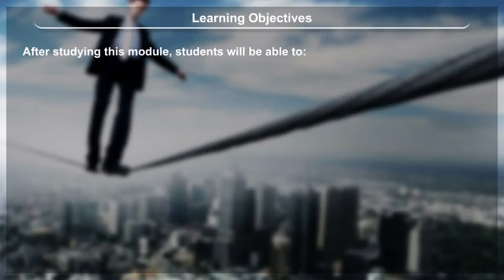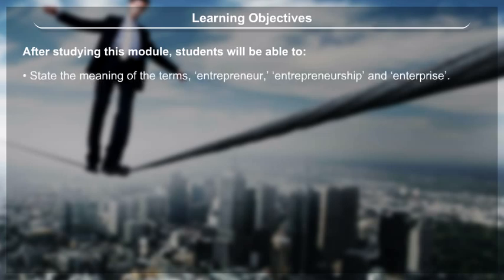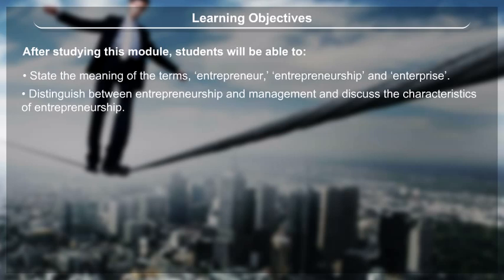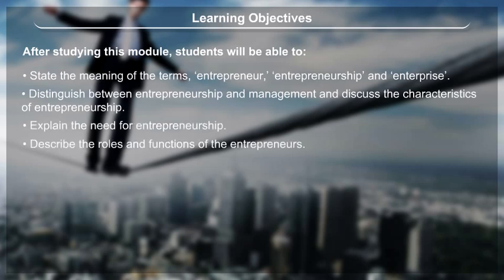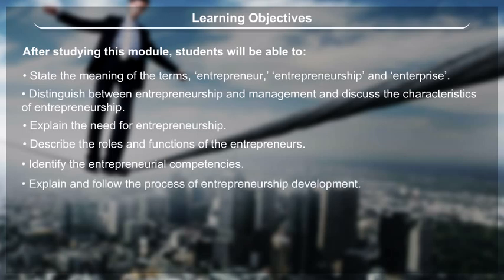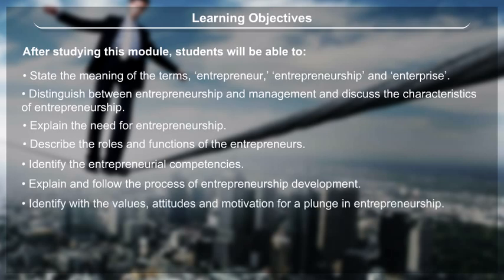Learning Objectives. After studying this module, students will be able to: state the meaning of the terms entrepreneur, entrepreneurship and enterprise; distinguish between entrepreneurship and management and discuss the characteristics of entrepreneurship; explain the need for entrepreneurship; and identify with the values, attitudes and motivation for a plunge in entrepreneurship.